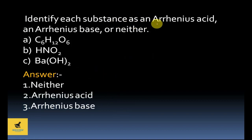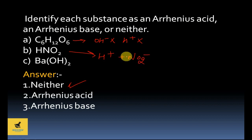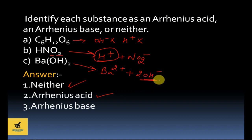Next question — same task: identify Arrhenius acid, base, or neither. C₆H₁₂O₆ releases neither OH⁻ nor H⁺ in water, so it falls in the neither category. HNO₂ — in water it breaks into H⁺ and NO₂⁻, so due to this H⁺, HNO₂ is called an Arrhenius acid. Next, Ba(OH)₂ — in water it gives Ba²⁺ plus 2OH⁻, so due to the OH⁻ released, Ba(OH)₂ is called an Arrhenius base.